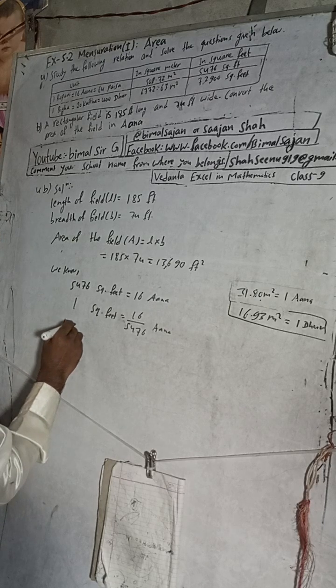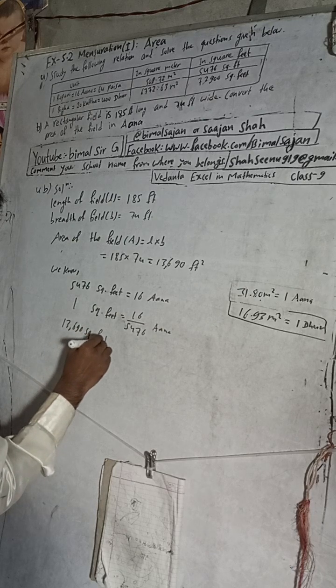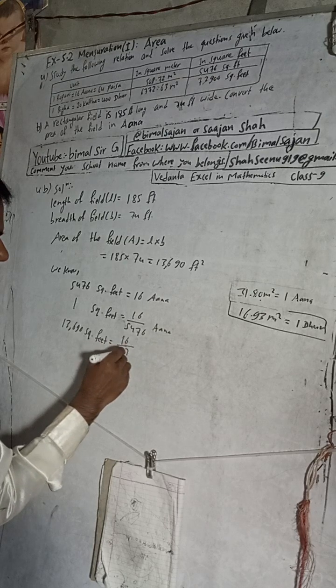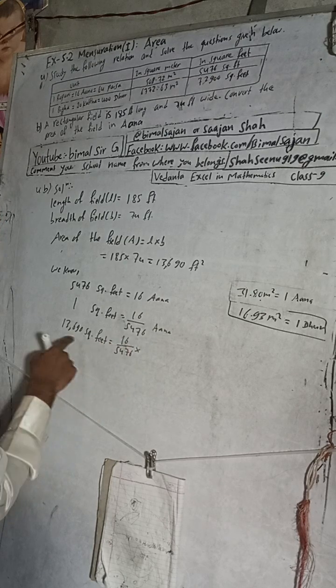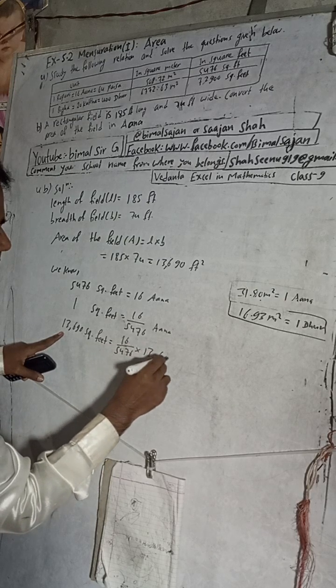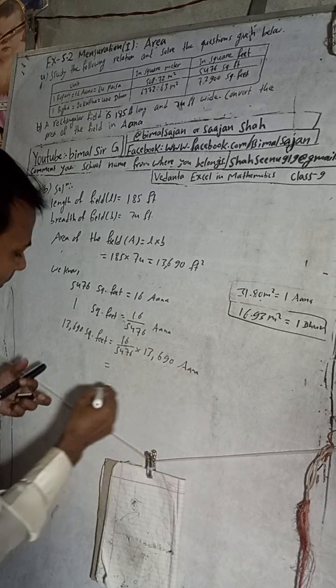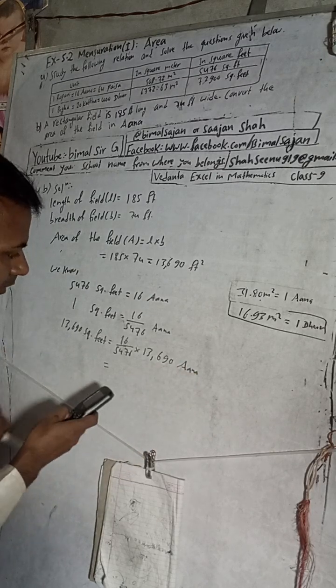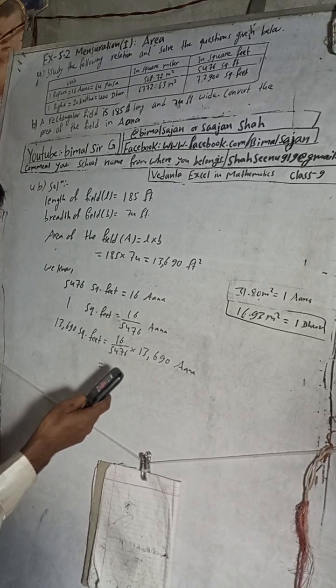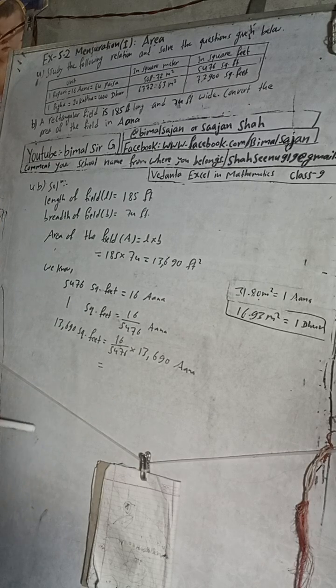And now, 13,690 square feet. So this is 16 over 5,476 into 13,690. This is equal to 13,690 into 16 and then divided by 5,476. That equals 40 ana.